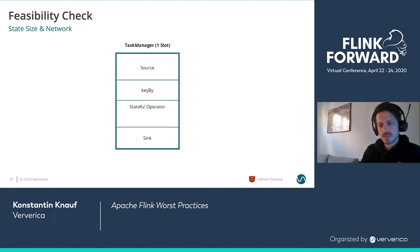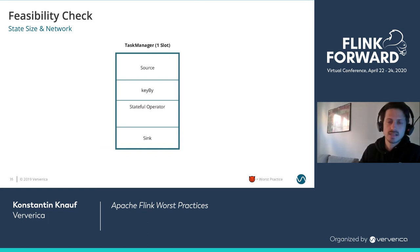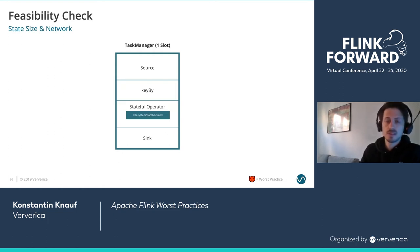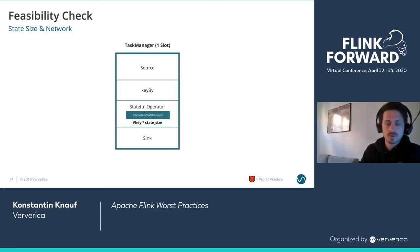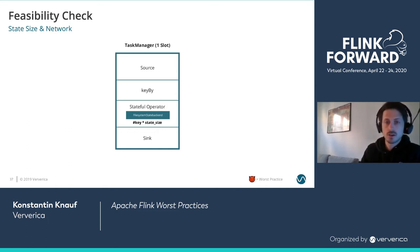The two things most important to look at are network and state size. State size means for checkpointing, but also memory in the case of the filesystem state backend — the minimum amount of memory needed for long-lived objects on the heap. The state size is pretty easy to calculate: it's the number of keys per task manager — your overall key space divided by the number of task managers — times the size of an individual state object. You can go through all the Java object overhead calculations, or just make a rough estimate for each state object. Just talking about ballpark numbers here.